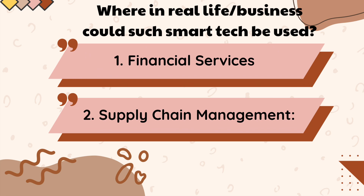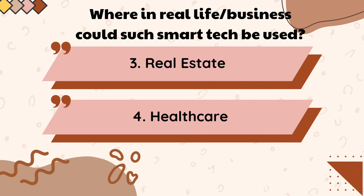First, in financial services, smart contracts can automate various financial transactions such as loans, insurance, and asset management. Second, in supply chain management, they can be used to track and verify the movement of goods. Third, in real estate, smart contracts can streamline buying and selling property by automating tasks like escrow, title transfer, and payment when all conditions are met. Fourth, in healthcare, patient records and insurance claims can be managed more efficiently and securely, ensuring data integrity and privacy.